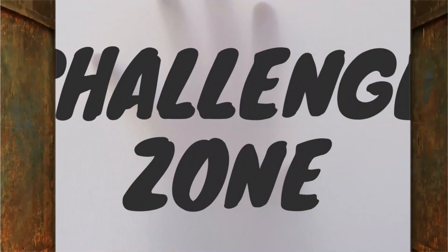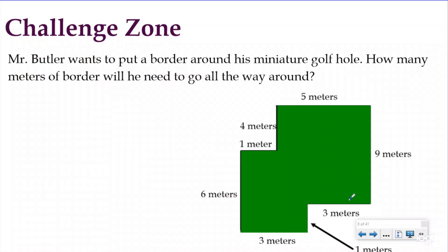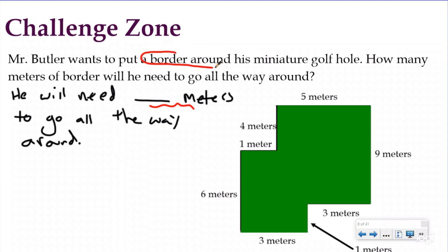Now I think it's time for the challenge zone. It says, Mr. Butler wants to put a border around his miniature golf hole. I only have one golf hole apparently in my backyard. How many meters of border will he need to go all the way around? So my statement is going to say he will need blank meters to go around. And I know I'm looking for anything about meters in my word problem or anything about going all the way around.